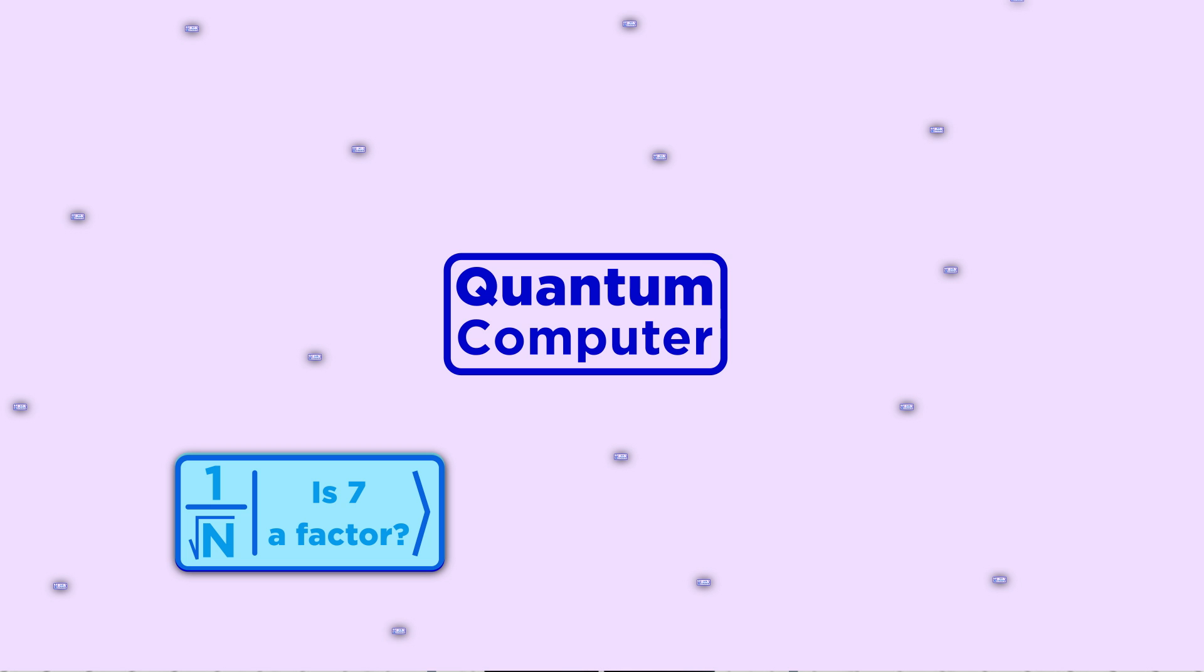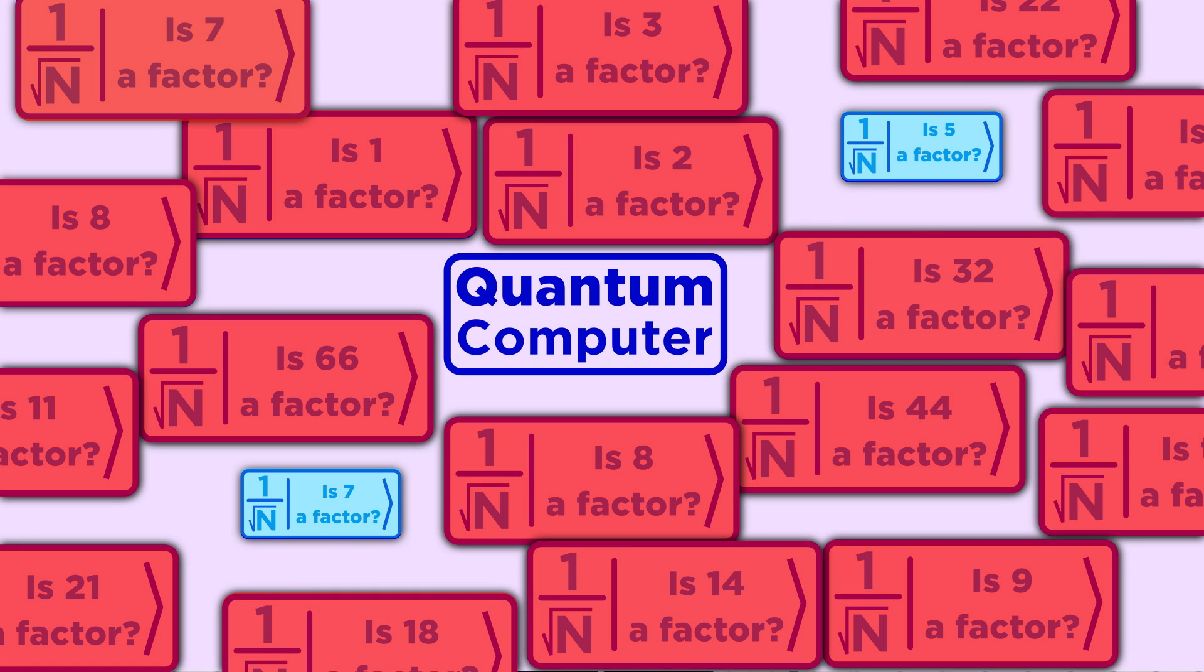But when you measure a quantum computer, that is, ask for the result of a computation, it doesn't tell you about all n pieces it's in. Instead, it will pick a state, each with probability 1 over n, and tell you what that state says. You can't look at the whole thing, just one random state. That's a problem for us. Only two of the n states give really useful information, that the number it checked was a divisor of n. So the vast majority of the time we run the computation, n minus 2 over n of the time, the result will just tell you that something is not a factor of n. That means our algorithm is no more efficient than checking random numbers to see if they are divisors using a classical computer.